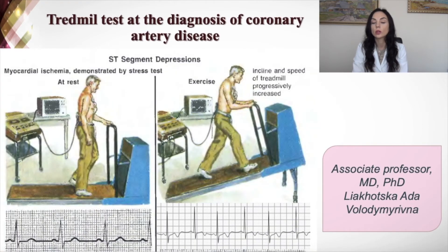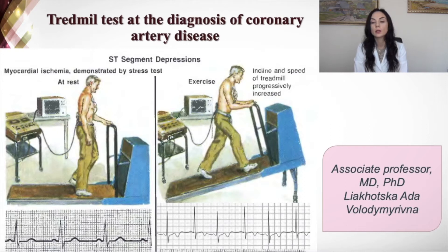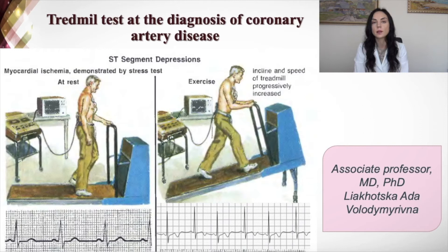The treadmill test plays a huge role in diagnosing coronary artery disease. During this test, the patient walks on a treadmill with progressively increasing workload, similar to a gym test. All ECG leads are recorded and monitored. In some leads, myocardial ischemia may be demonstrated — you can see depression or elevation of the ST segment as the speed increases. You should stop the test when these changes appear, or if the patient feels unwell. Also monitor blood pressure, which should not exceed 140/90 mmHg.